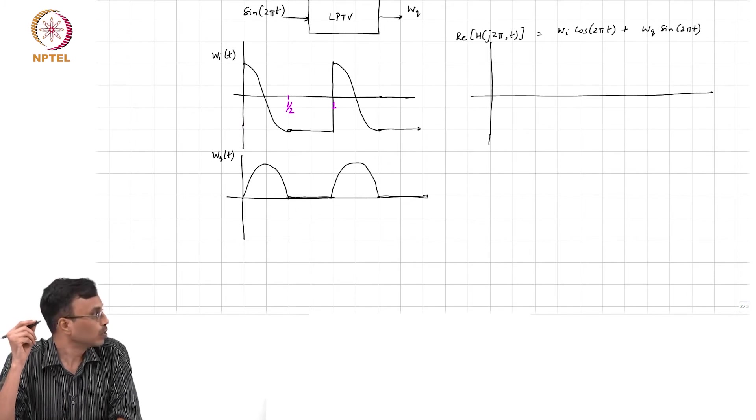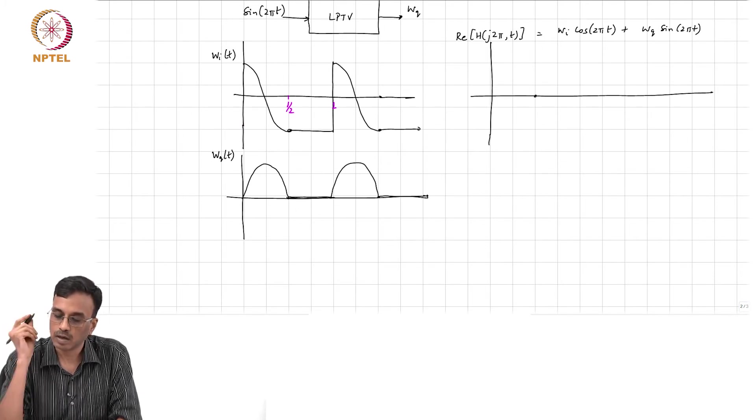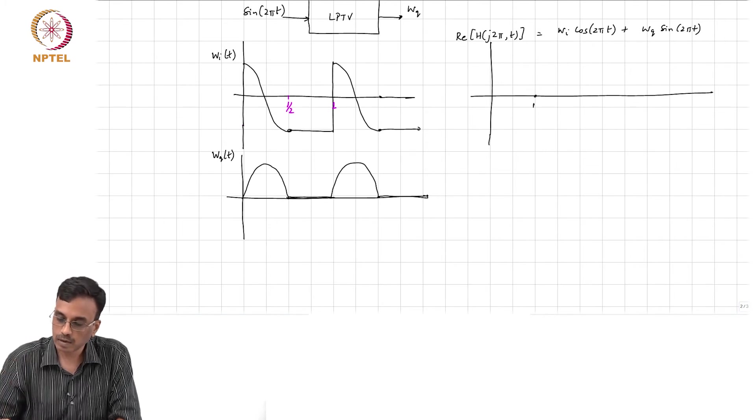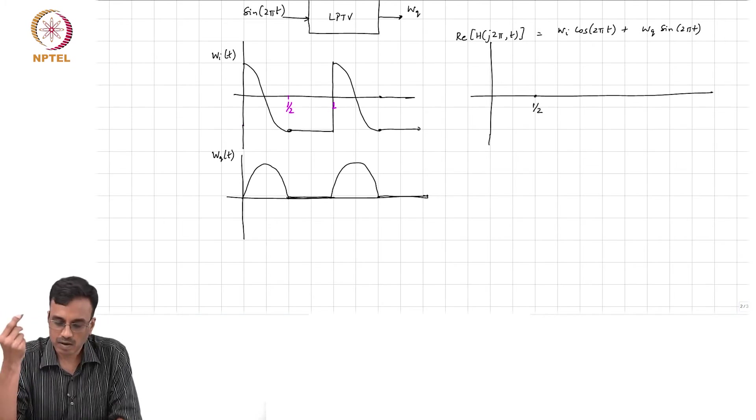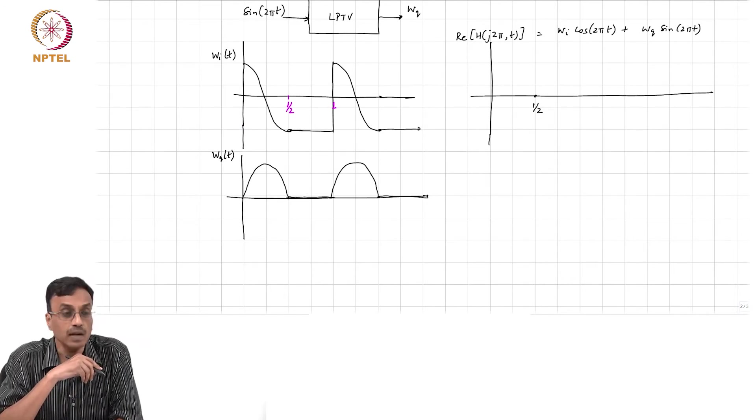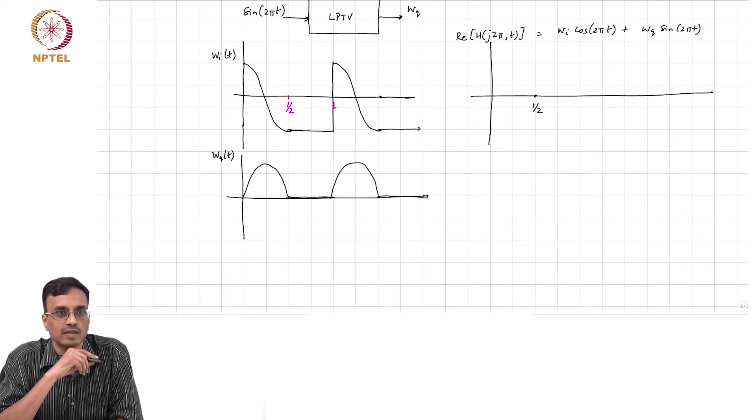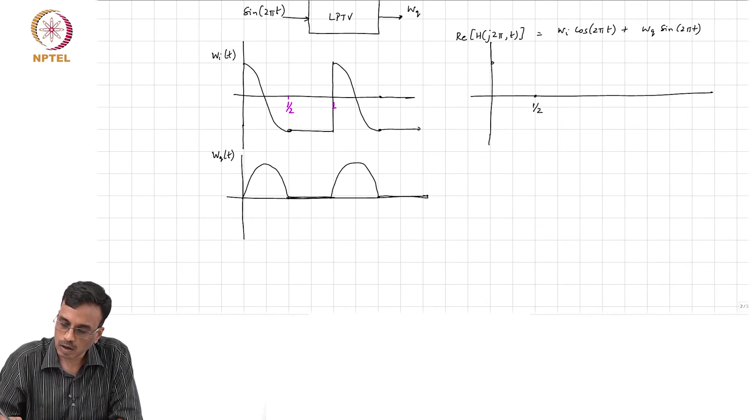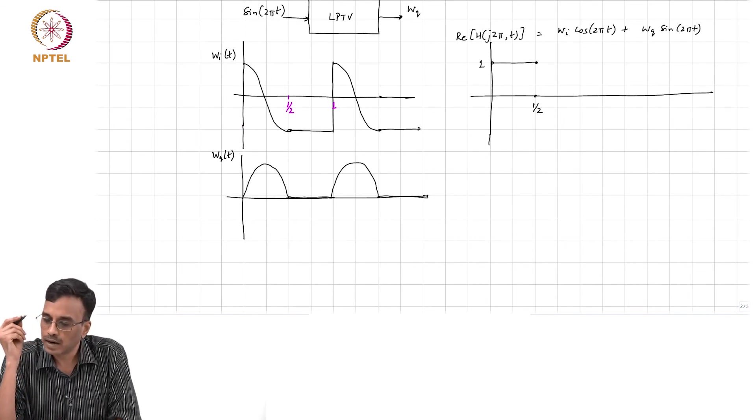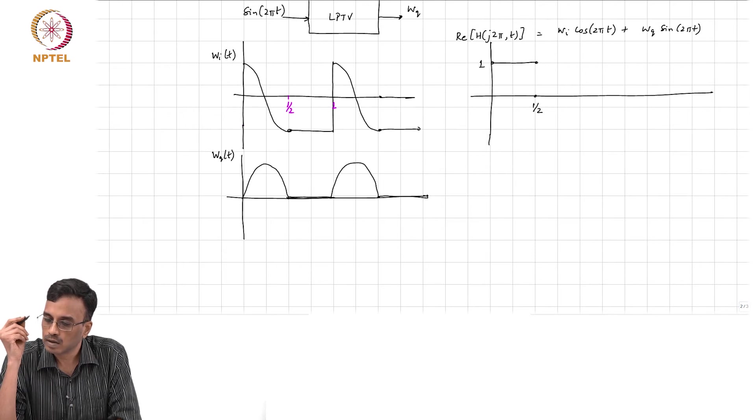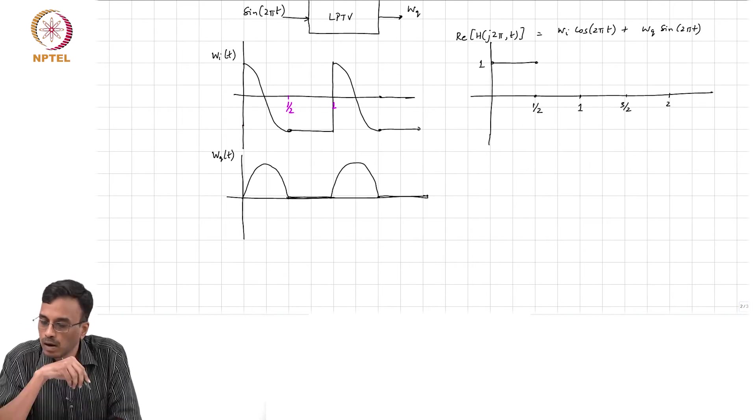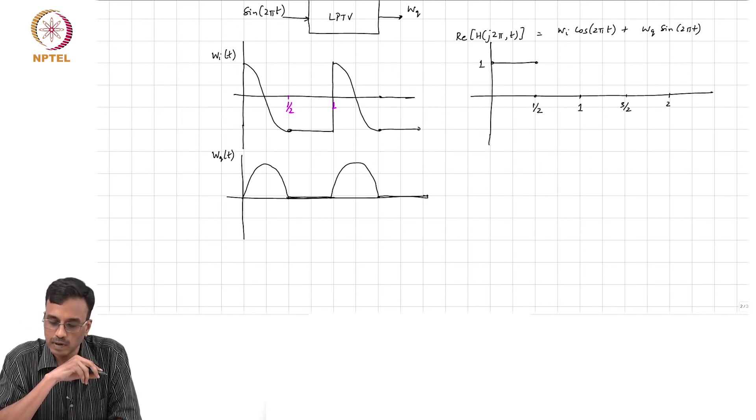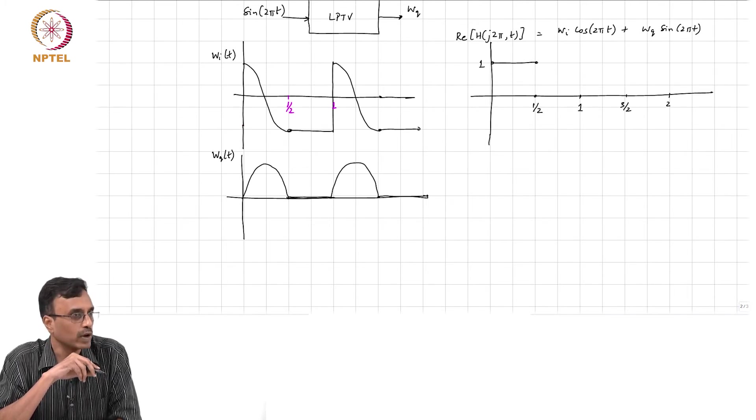What do you think we will have in the first quadrant, in the first half second? You have cos² 2πt plus sin² 2πt, and therefore that is going to be 1, alright. Right, and what about in the region half to 1? wᵢ times cos, right - wq is 0 anyway, so we do not worry about it.